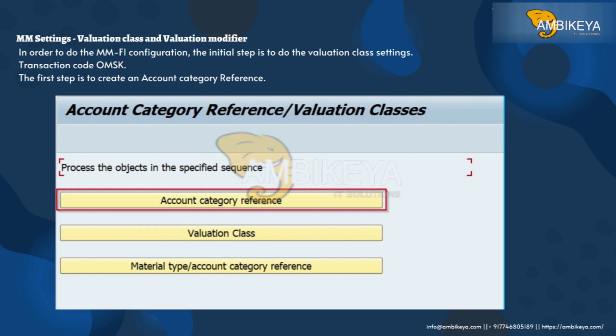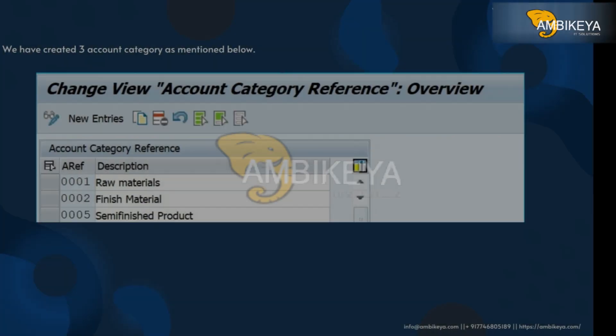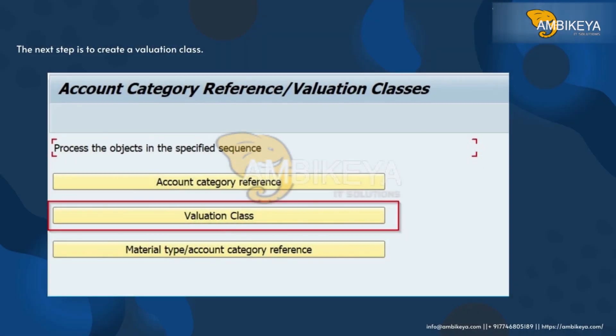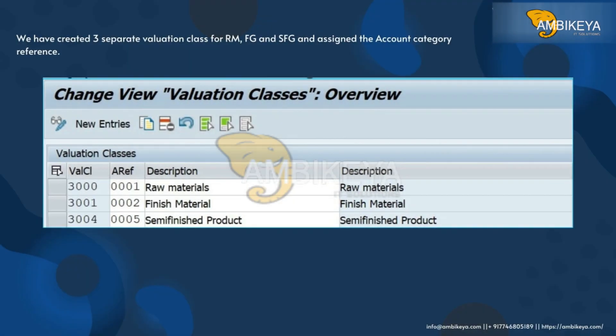The first step in OMSK is to create an account category reference. We have created three account categories as mentioned. The next step is to create a valuation class. We have created three separate valuation classes for RM, FG, and SFG.